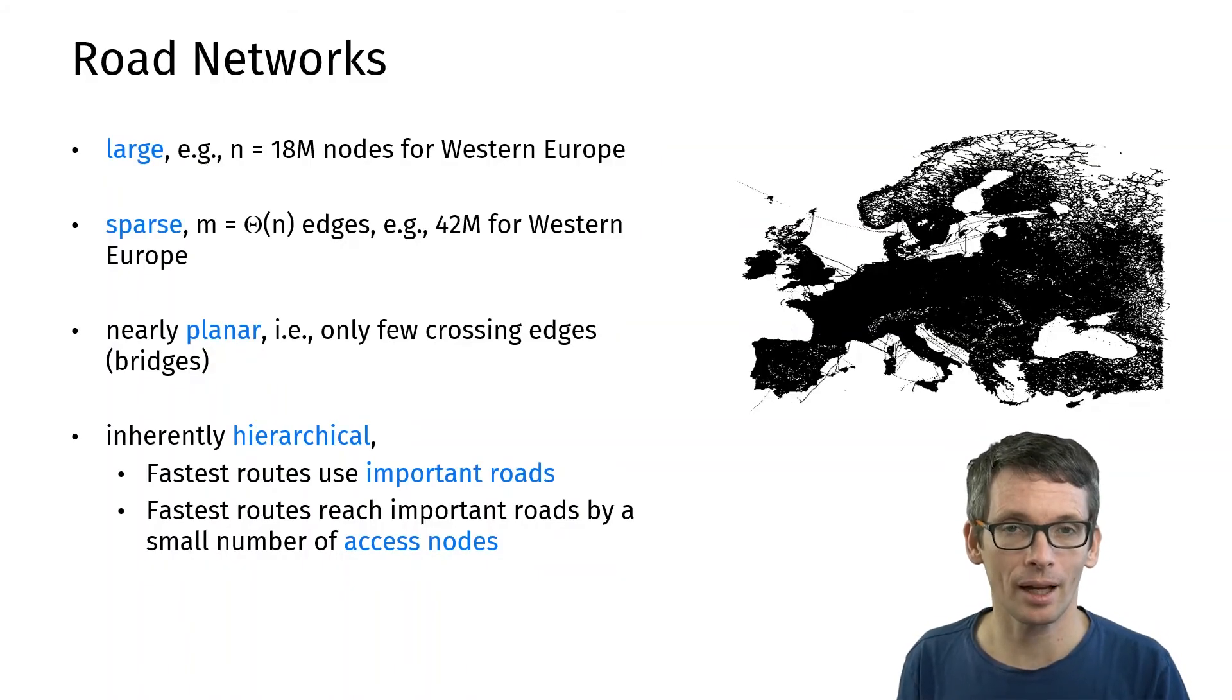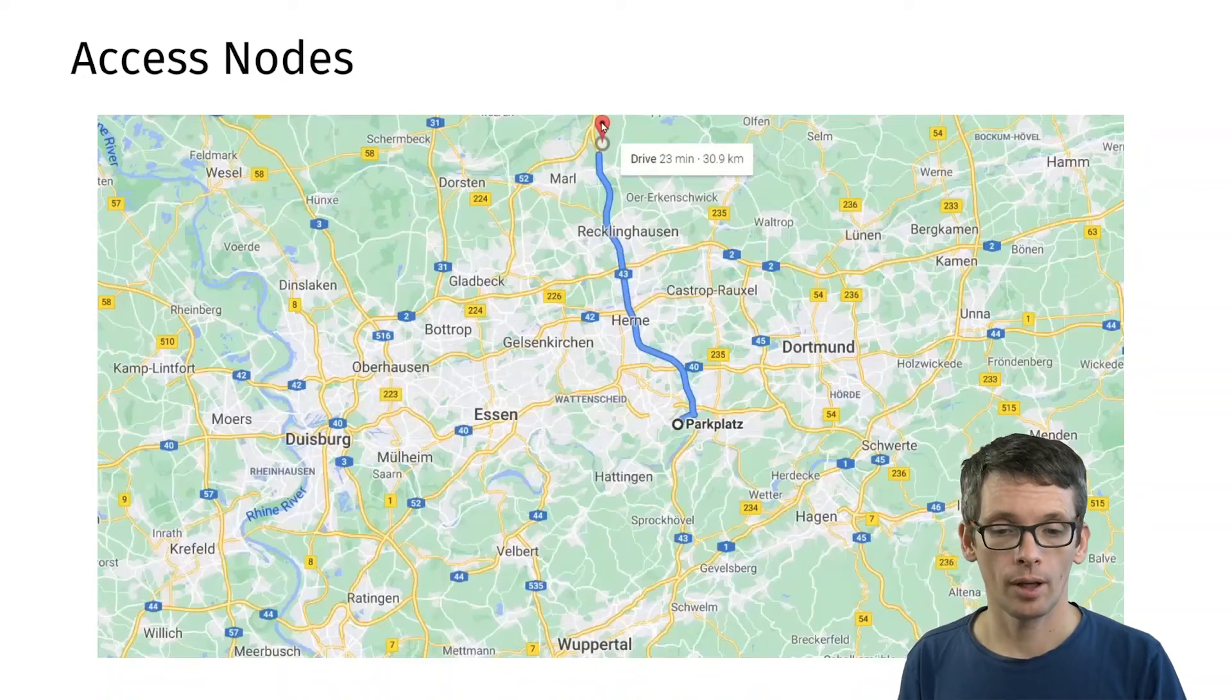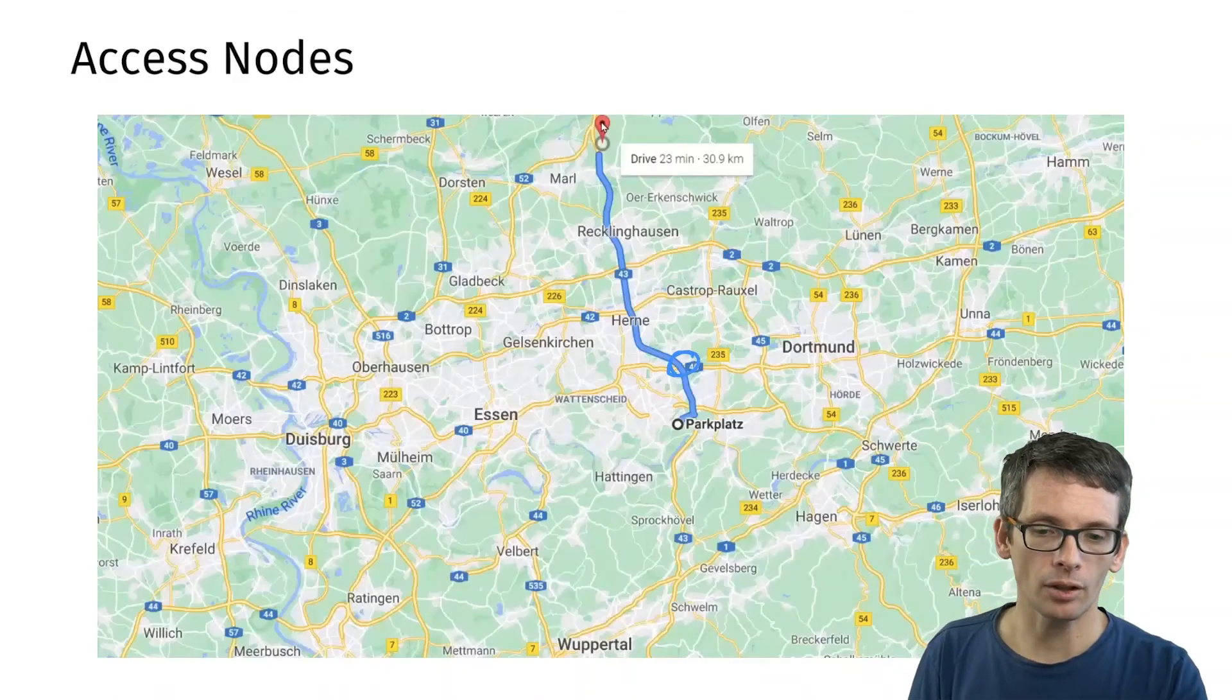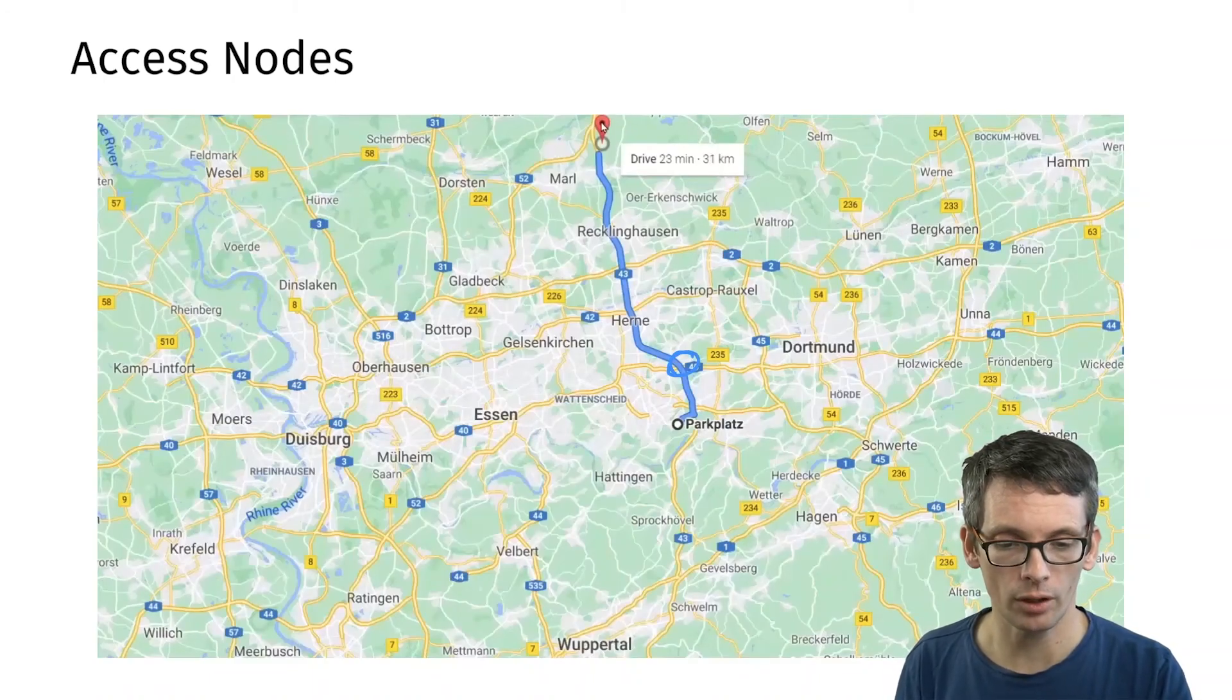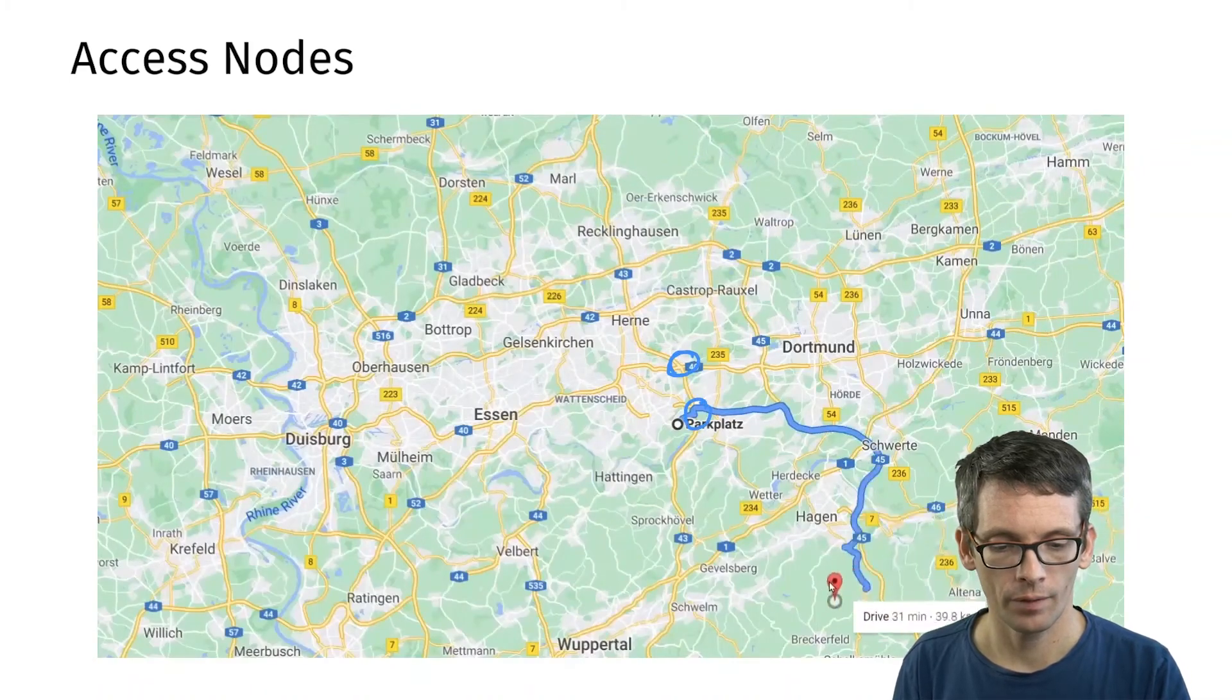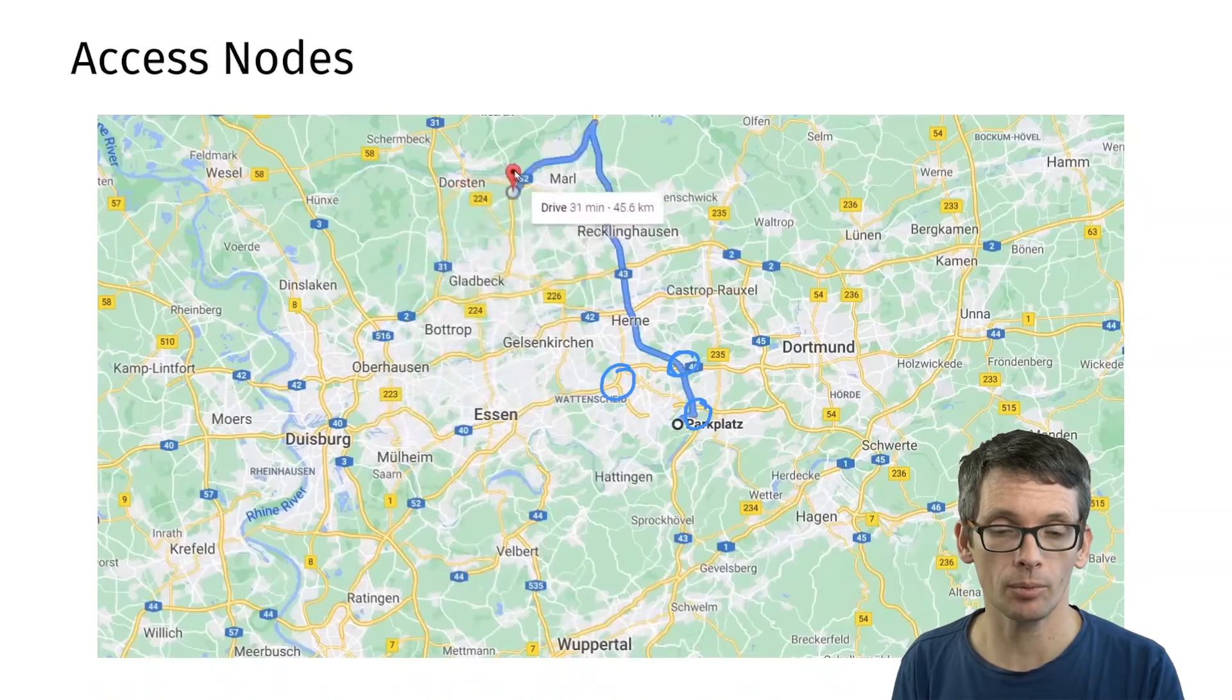Let's again look at this by example. Here I'm again starting at my parking lot but now I'm going far, going far north. Let me mark an important node here and now let me start dragging this point around and see how often the node that I use as an access point changes. Once I can use this access point all the time, all the time, all the time, let's see, oh one more time. So I needed three access points here.